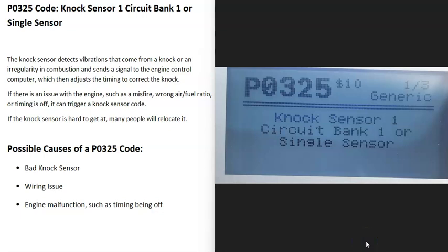Today I'm talking about a P0325 code, what it is and how to fix it. A P0325 code is knock sensor 1 circuit bank 1 or single sensor.